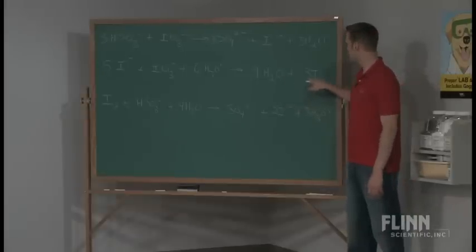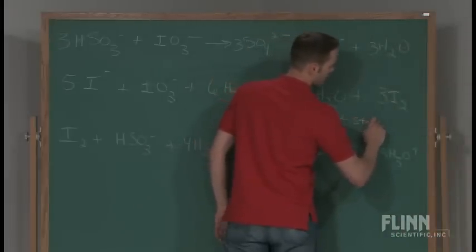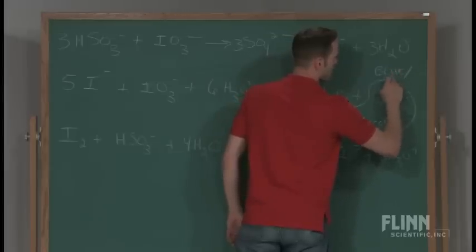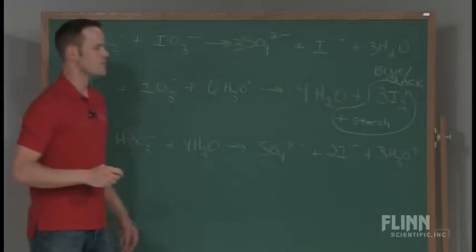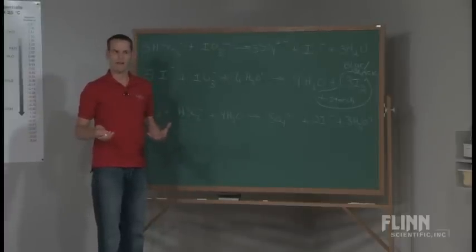So what happens here is that we have this, when combined with starch, that makes a blue-black compound. So that blue-black complex that's formed is what we see when we see that blue color at the end of the iodine clock reaction.